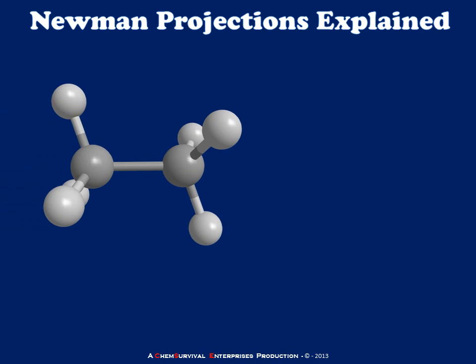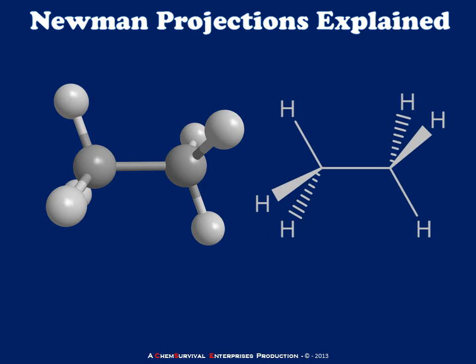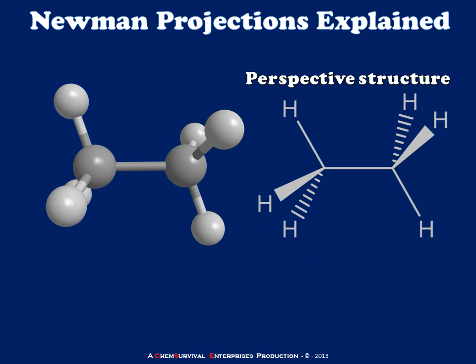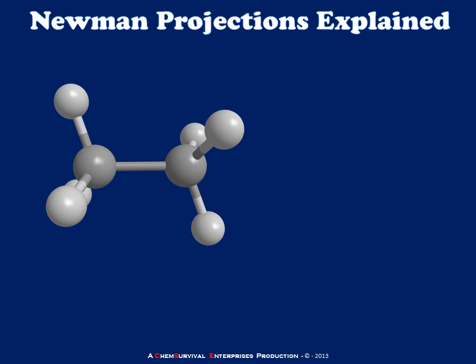So let's begin exploring Newman projections by going back to our ethane molecule. The perspective structure does give us some three-dimensional information, but it makes it difficult to draw these compounds with very specific dihedral angles between different carbon-hydrogen bonds. In order to get a more accurate depiction of a very specific rotameric state, we turn to Newman projections.